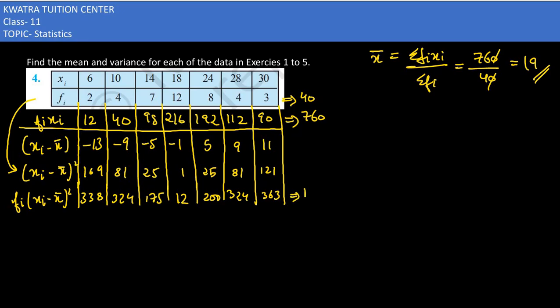So this was coming 1736. Now we have to find the variance, that is nothing but σ². What do we need to find? The summation fi (xi minus x̄)² divided by summation fi.